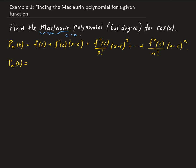So we have the Taylor polynomial. When we let c be zero, we're going to get f(0) plus f prime of zero times x plus f double prime of zero divided by two factorial times x squared, and so on. That is the Maclaurin polynomial.